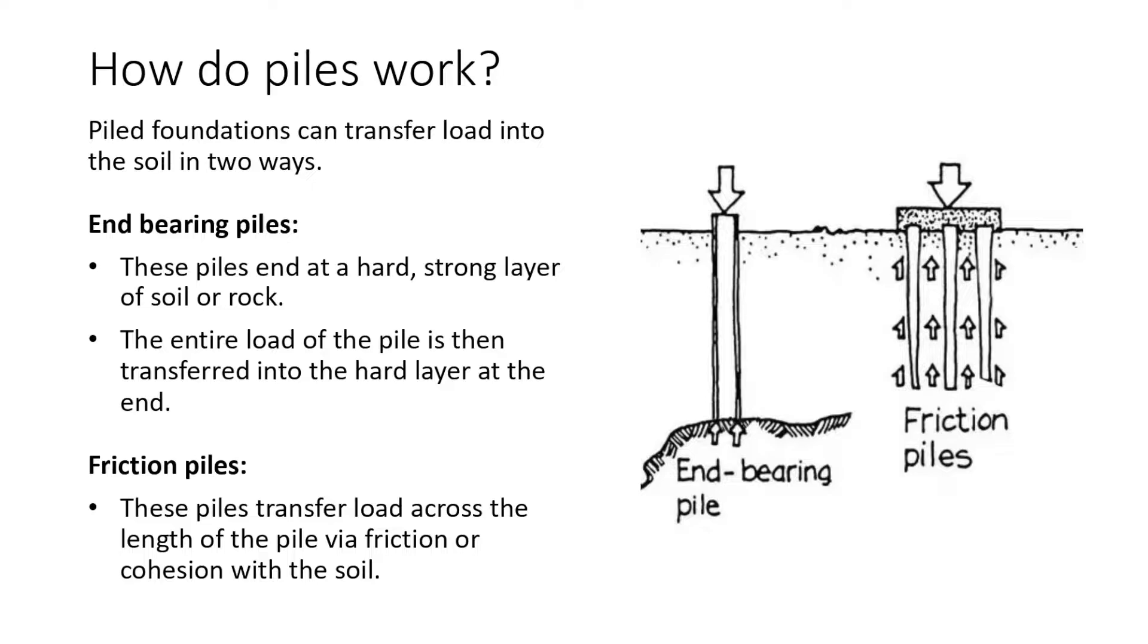How do piles work? Piled foundations transfer load in two ways. End-bearing piles terminate at a hard, strong layer of soil. The pile cannot settle to activate any friction with the surrounding soil, and therefore the entire load is transferred into the base. Skin friction piles allow the pile to settle, meaning that the pile transfers loading via friction into the surrounding soil.